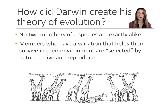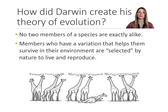Now that I've given you a preview, let's cover the basics of his theory of natural selection. There are five basic pillars that I'll cover in this lecture, and I'll use the illustration of the giraffes at the bottom of the screen to help explain these principles. The first pillar is that no two members of a species are exactly alike.